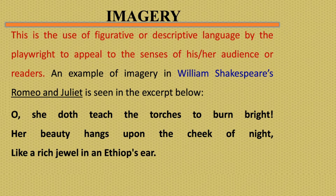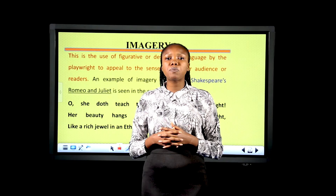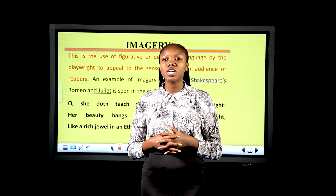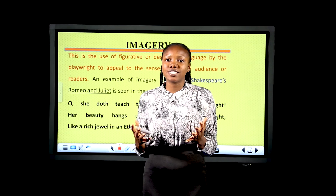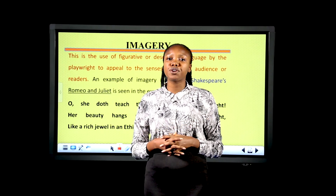Imagery is the use of figurative or descriptive language by playwrights to appeal to the five senses of the audience or readers. An example can be seen in Shakespeare's Romeo and Juliet: 'O, she doth teach the torches to burn bright. Her beauty hangs upon the cheek of night, like a rich jewel in an Ethiop's ear.' Shakespeare makes use of descriptive language that immediately gets our attention and alerts our five senses.